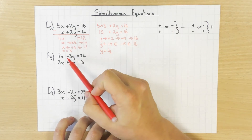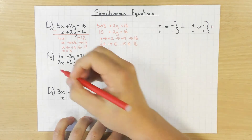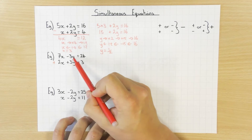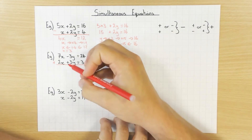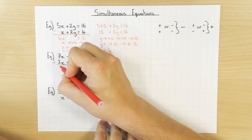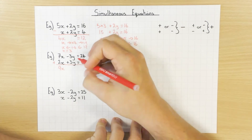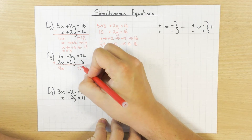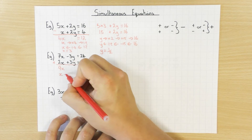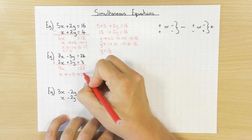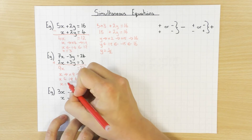Let's try a slightly different one. This time I've got a minus and a plus. Using the rule: different signs means we add the equations to eliminate the 3y — notice both equations have 3y, that's the one we want to eliminate. So adding: 7x plus 2x is 9x; minus 3y plus 3y cancels to nothing; and 24 plus 3 is 27. We've eliminated y, leaving 9x equals 27. Flowchart: 27 divided by 9 gives x equals 3.